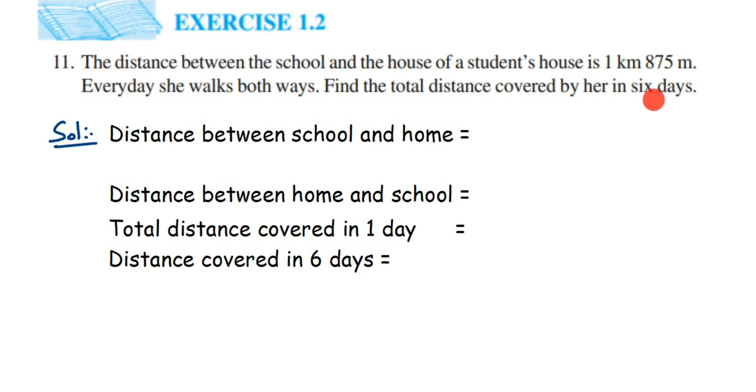We know that distance traveled while going to school and coming back is 1 kilometer 875 meters. I've already written the statements here to save time. The distance between school and home is 1 kilometer 875 meters.